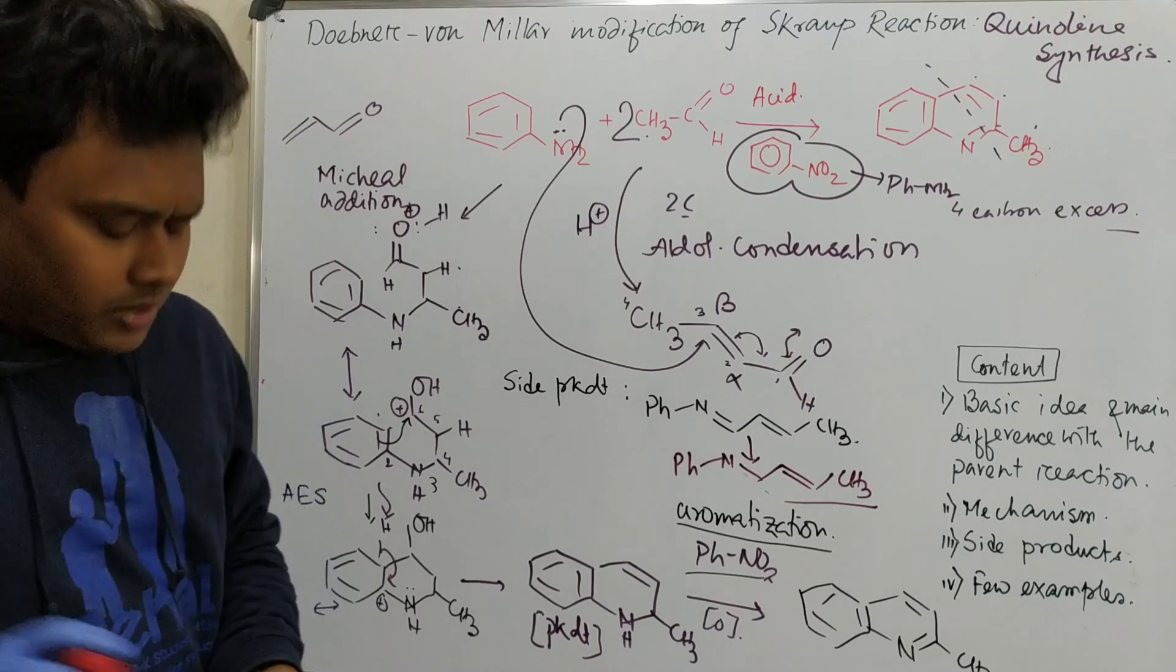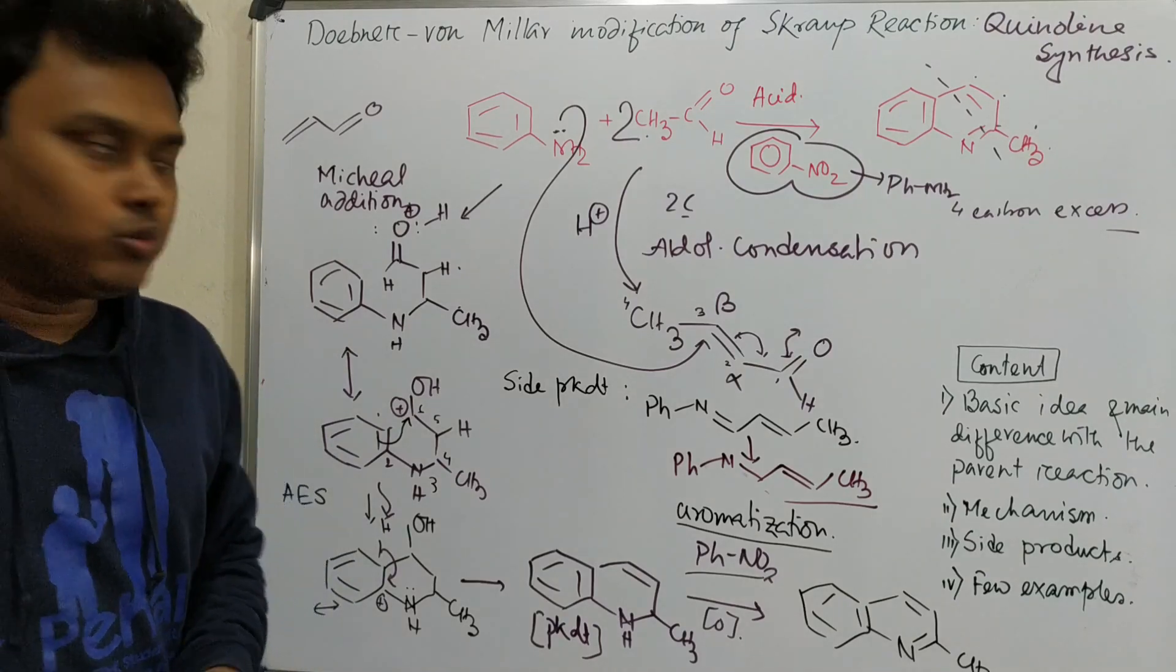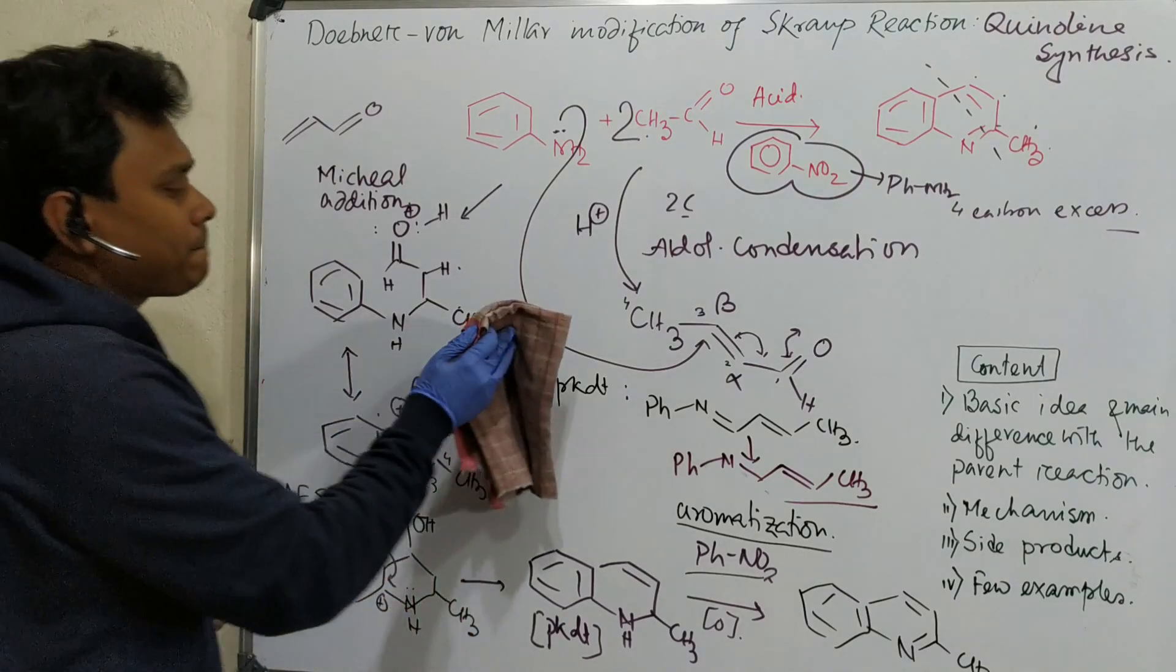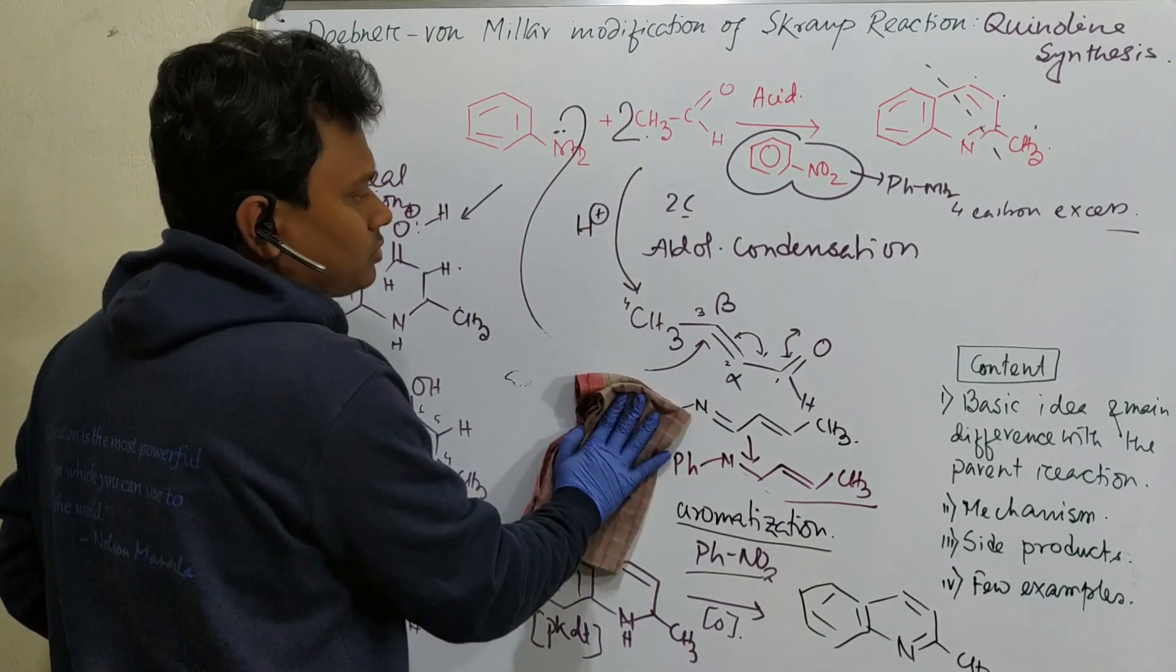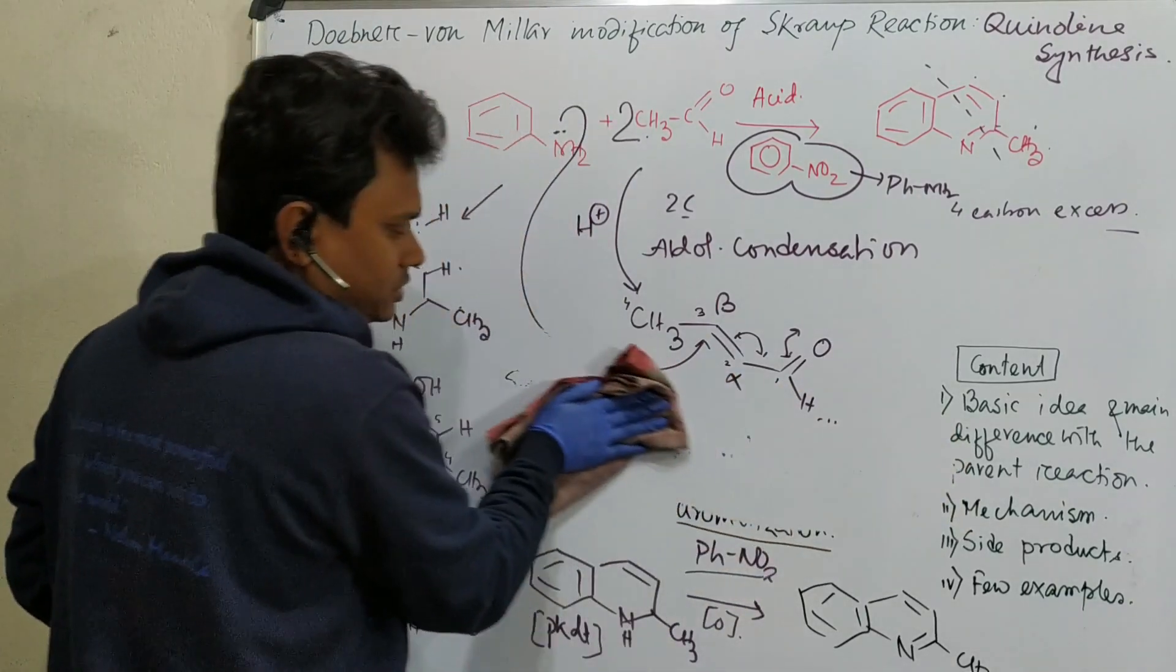So what the side product indicates is that this side product gives the message that reaction Schiff base formation is possible but not the prime because reaction is preferred to follow the Michael addition pathway. So this is the overall discussion for the mechanism of this quinoline preparation. Now, a simple question is that we have discussed about the aldehyde. Will it be possible for ketone? So let's discuss that question.